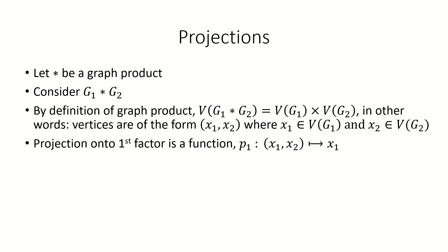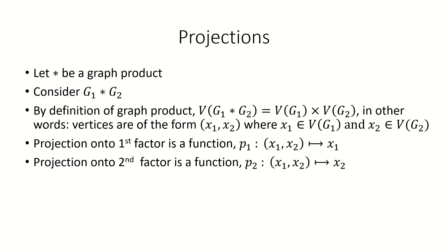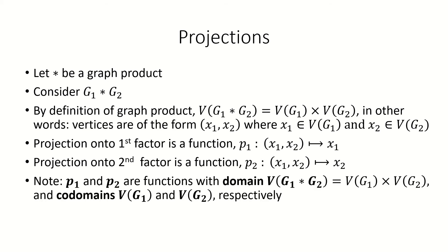The projection of this product onto its first factor is the function p sub 1 that maps vertices in the product graph to their first coordinate, which is a vertex in the first factor graph. The projection onto its second factor maps vertices in the product graph to their second coordinate, which is a vertex in the second factor graph. The projections p sub 1 and p sub 2 are functions from the Cartesian product of the vertex sets of g sub 1 and g sub 2 to the vertex set of g sub 1 and of g sub 2, respectively.